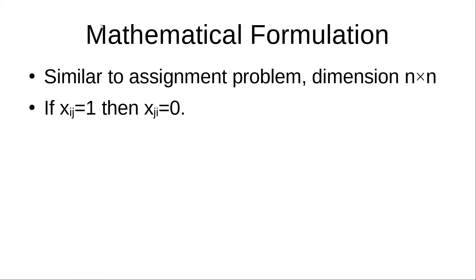In the mathematical formulation, we also have to understand that this problem is similar to an assignment problem of dimension N×N. Also, if Xij equals 1 — that is, if the salesman has traveled from city I to city J — then it automatically means that Xji should equal 0, because we are going to visit each city only once. If we travel from city 2 to city 3, we must ensure we do not travel from city 3 to city 2, as that would mean revisiting city 2, which has to be avoided.